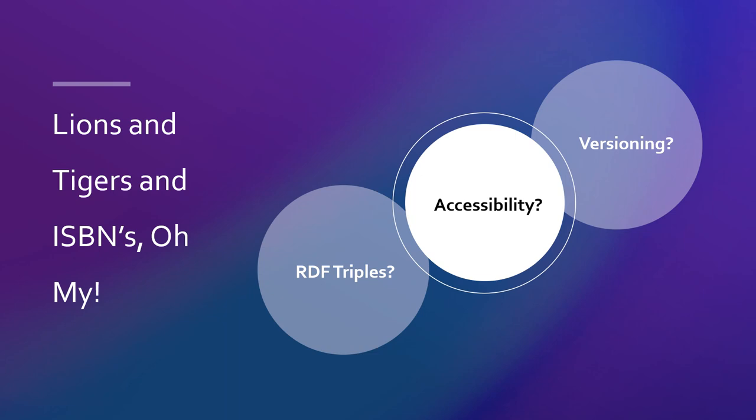Let's step back a moment and consider accessibility. A large amount of intentional work is currently focused on creating and supporting accessible materials. Part of that accessibility effort is access. Day one access to burden-free materials aligns closely with OER and UDL principles and best practices. However, how can faculty track and report what they are using in a timely manner so the subject matter experts in accessibility and instructional design can properly vet and support those materials?